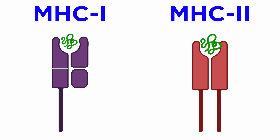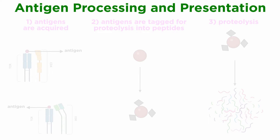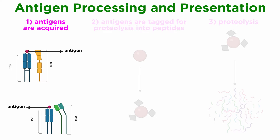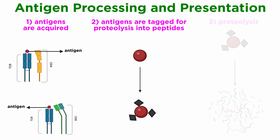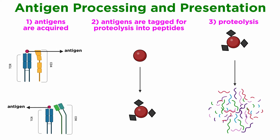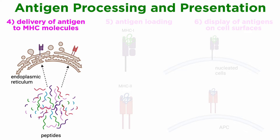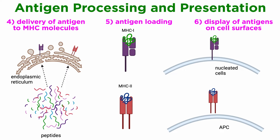The structure of MHC molecules determines which antigens are presented. The entire process of antigen processing and presentation can be divided into six distinct steps for both MHC class I and II molecules. First, the antigens are acquired. Second, antigens are tagged for proteolysis into peptides. Third, proteolysis. Fourth, delivery of antigen to MHC molecules. Fifth, antigen loading. And sixth, display of the antigens on cell surfaces.